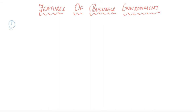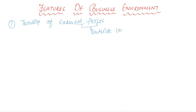First of all, in the first statement, we said that it is the sum total of individuals, institutions and other forces. So we can say that the first feature is totality of external forces. By external forces, we mean those which are outside the control of that particular business. And by totality, we mean the sum total of individuals, institutions and other forces. So this is the first feature of your business environment.